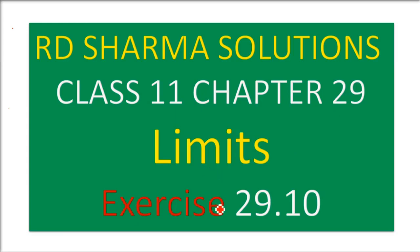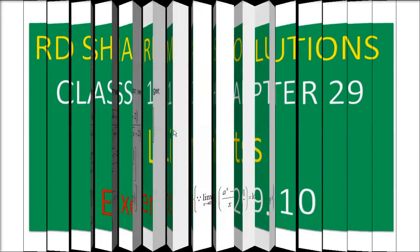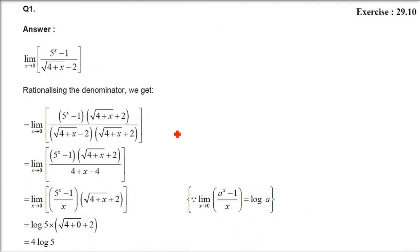This is R.D. Sharma solution class 11, chapter 29 limits, exercise 29.10. In this exercise we have a variety of questions and we are going to use the evaluation of exponential and logarithmic limits. There are 43 questions in the addition I have done. It will take a while — you just need to know these formulas and identities so that we are able to solve these questions easily.